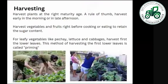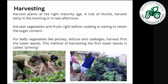For harvesting, harvest plants at the right maturity age — once the plants have reached physiological maturity. As a rule of thumb, harvest early in the morning or late in the afternoon. For fruits, harvest right before cooking or eating to retain sugar content. For leafy vegetables like petchay and lettuce, harvest the lower leaves first — this method of harvesting the lower leaves is called priming.